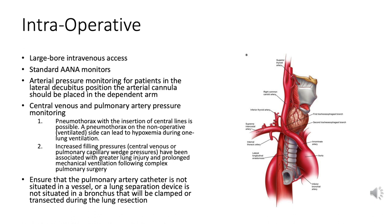Invasive arterial pressure monitoring provides real-time data on blood pressure and can help in obtaining arterial blood gases. When patients are positioned in the lateral decubitus position for thoracic surgeries, the arterial cannula should be placed in the dependent arm to get the most accurate readings given the impact of gravity.